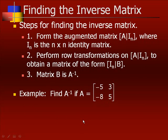To show that two N by N matrices are inverses of each other, it is sufficient to show that AB equals I sub N. The steps for finding the inverse matrix: form the augmented matrix [A | I sub N], perform row transformations to obtain [I sub N | B], and then matrix B is A⁻¹.